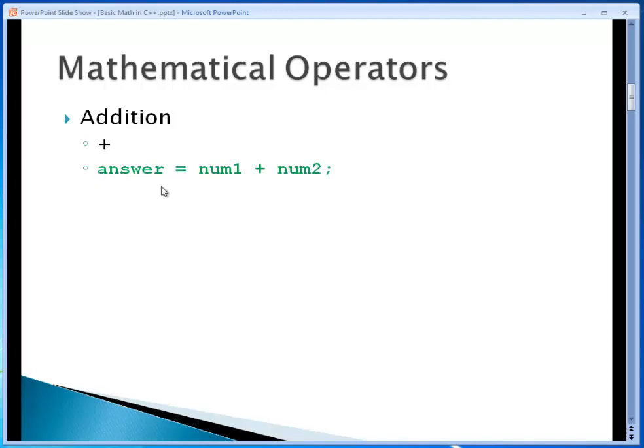You always put the variable that's going to hold the answer. In this case, a variable called answer. You put that on the left, and then you put the assignment operator. So this basically says answer is assigned the value of, and then I have two variables, num1 and num2. And so I say num1 plus num2. Have a semicolon at the end of the statement. So it's as easy as that to use the addition operator. Simply place it in between the two number variables that you want to add.